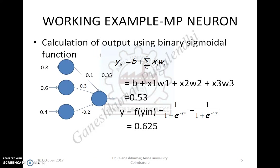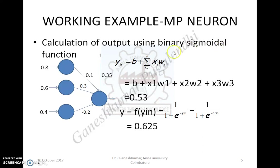Now it is necessary to calculate the output. Output calculation can be carried out with the help of any activation function. When asked to find the output, you will be provided with an architecture having inputs, weights, and optionally bias, and they will mention the activation function. As usual, it starts with net input calculation. Once the net input is calculated, the net input value is substituted into the activation function to find the output. For this particular problem, the activation function given is the binary sigmoidal function: 1 / (1 + e^(-y_in)), giving the final output value.